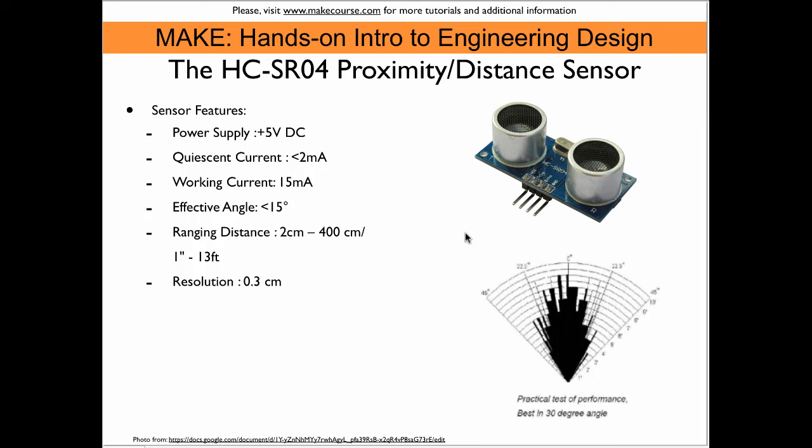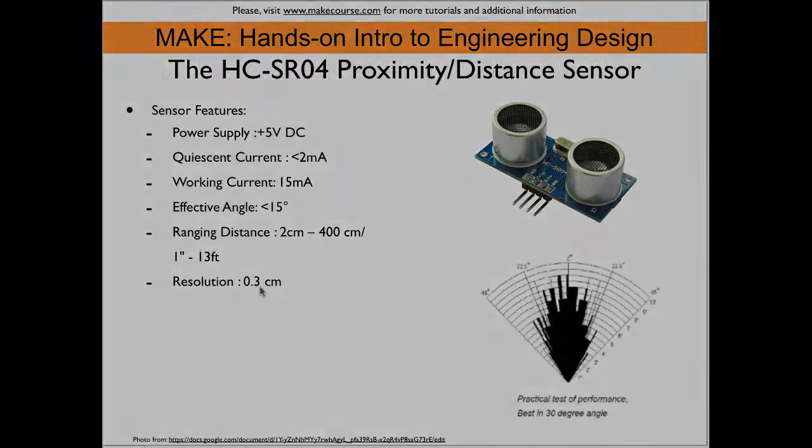This is the sensor we are using for this in-class project. It is called HC-SR04. The main features of the sensor are its effective angle of less than 15 degrees, so you see it covers a fairly small angle in front of it. The ranging distance, the measurement distance, is 2 centimeters to 4 meters. The resolution of the sensor is 0.3 centimeters.